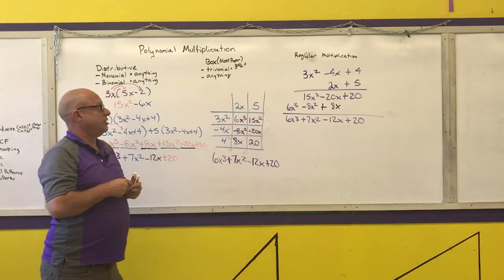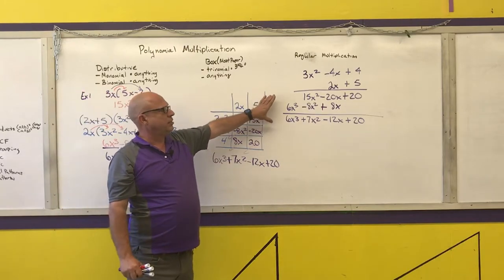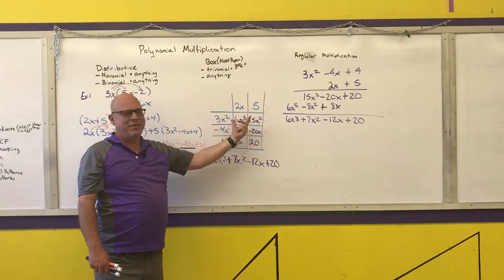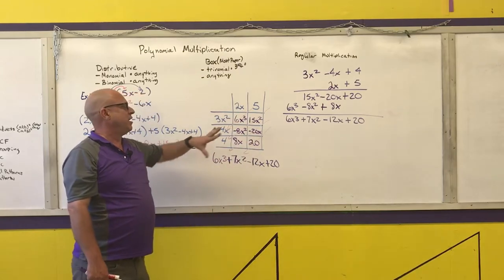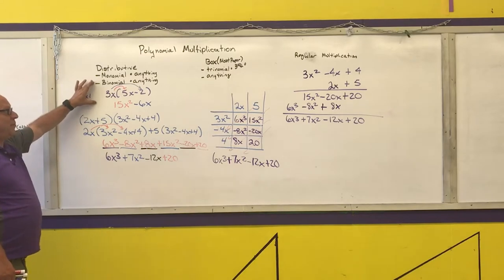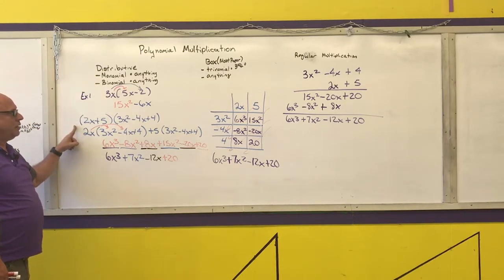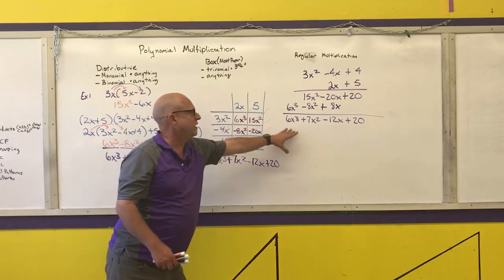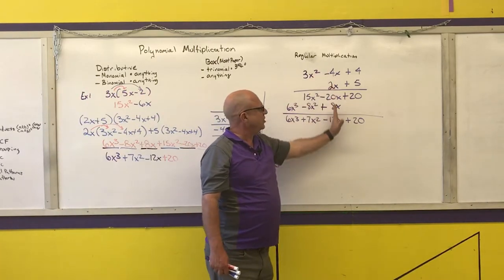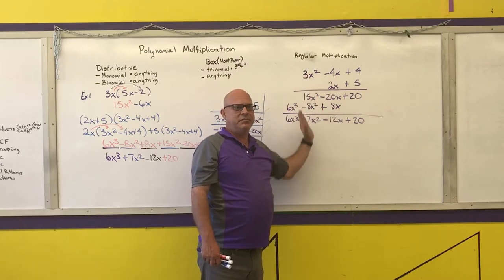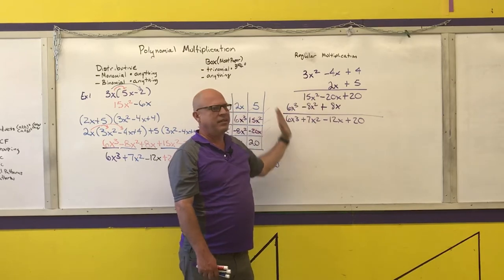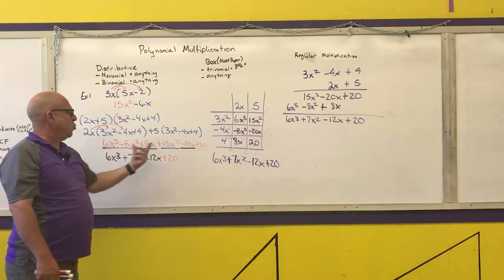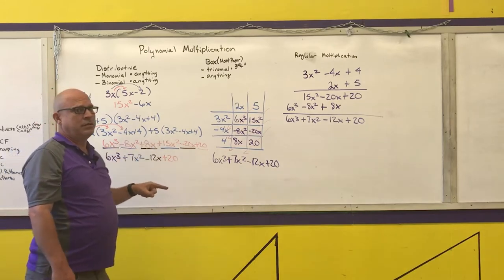My recommendation is to do polynomial multiplication using regular multiplication. The box method requires you to leave enough room inside the boxes and can get really messy. The distributive property gets really messy any time you're more than a binomial. Notice I did the exact same six multiplications, and regular multiplication gives me a visual way to line up like terms — all constants, then x's, then x squareds, then x cubes — so I can combine them without bouncing around.